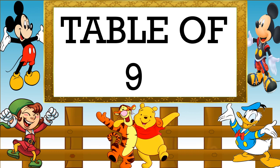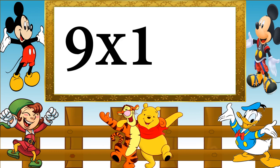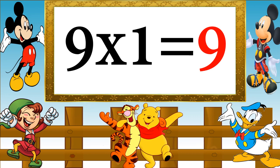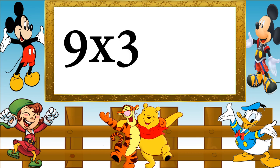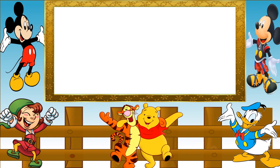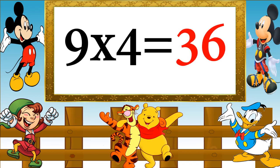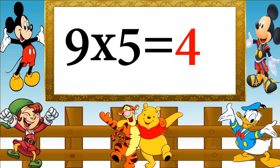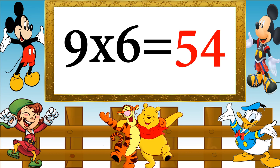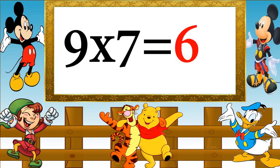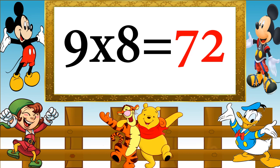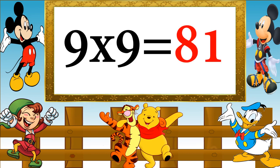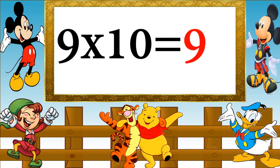Table of 9. 9 ones are 9, 9 twos are 18, 9 threes are 27, 9 fours are 36, 9 fives are 45, 9 sixes are 54, 9 sevens are 63, 9 eights are 72, 9 nines are 81, 9 tens are 90.